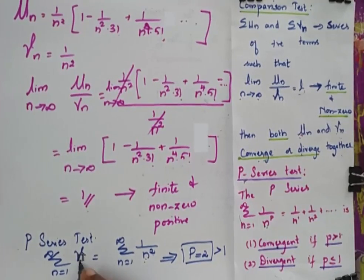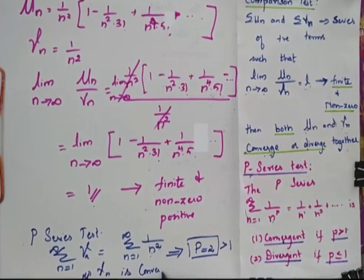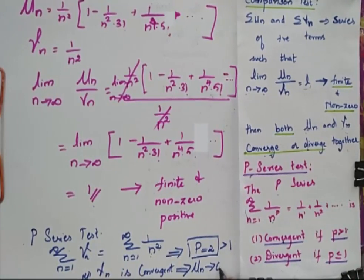Therefore, v_n is convergent, which implies u_n is also convergent.